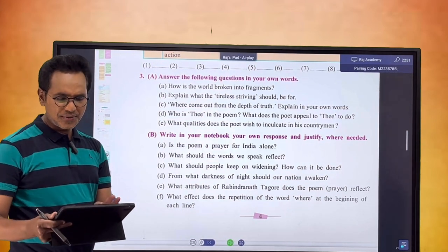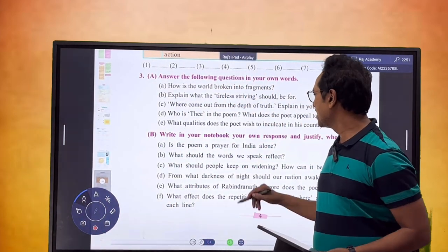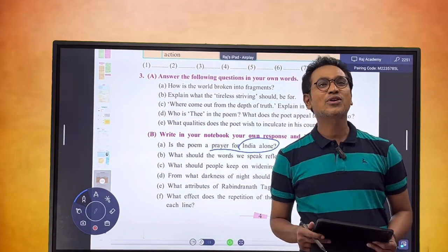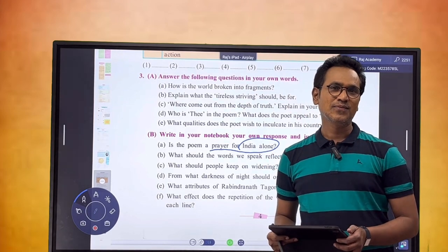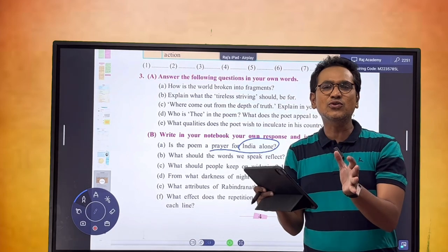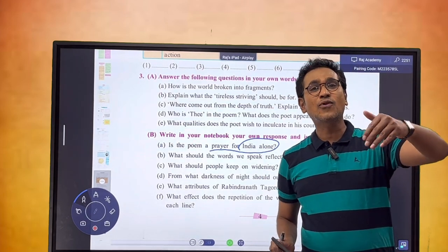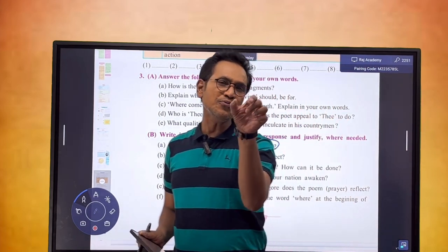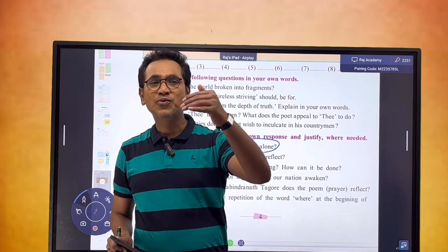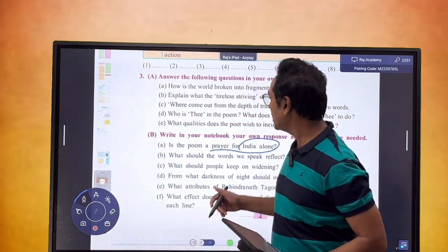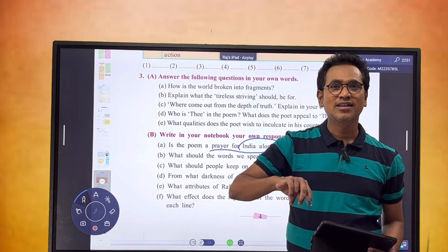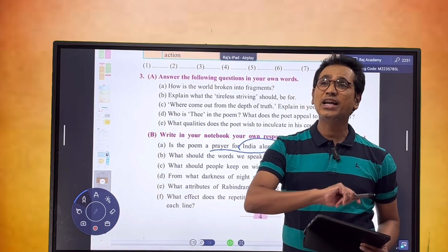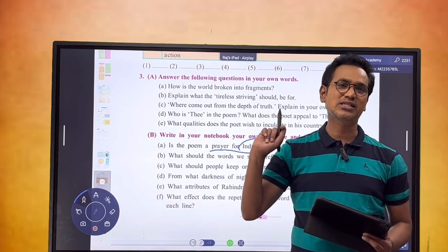Is the poem a prayer for India alone? It's a wonderful question. The poem is not constrained to one region or one nation. The poet is for the universe, for the world. The poet does not write for few people or one nation. The poet is always there for the world. This where is not only India. This where can be any place in the world.